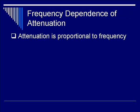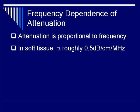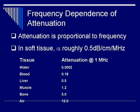Regarding frequency dependence of attenuation: attenuation is proportional to frequency. In soft tissue, alpha is roughly 0.5 dB per centimeter per megahertz. For example, a 1 MHz signal gives 0.5 dB per centimeter, whereas a 2 MHz signal gives twice that attenuation coefficient, becoming 1 dB per centimeter. This table lists the attenuation coefficient for various tissues, ranging from 0.0002 for water, 0.5 for liver, 1.2 for muscle, up to 12 for air.